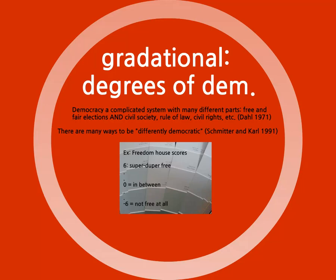Freedom House has different dimensions that they rank, such as media freedom and civil rights and liberties. For these categories, they rank countries as being somewhere on a spectrum from negative 6, or completely not free, to positive 6, or completely free. This is useful because in a way it is more realistic, given that democracy is an ideal type that countries can resemble more or less but never actually perfectly achieve. It is also very flexible.